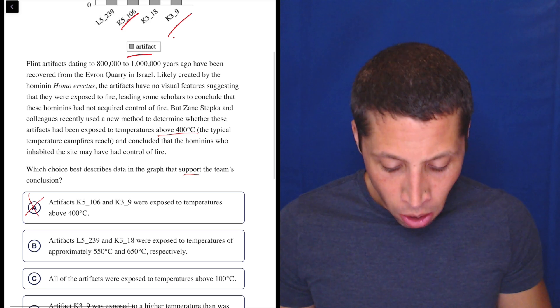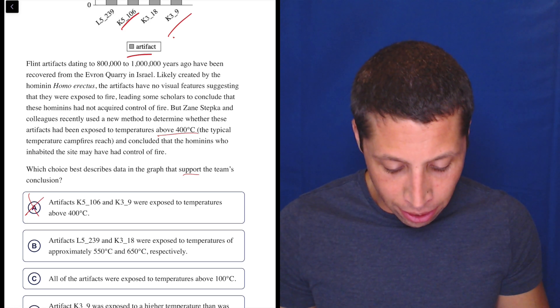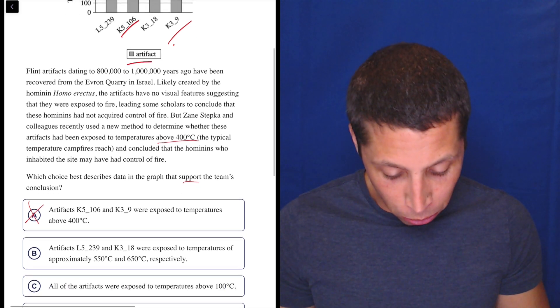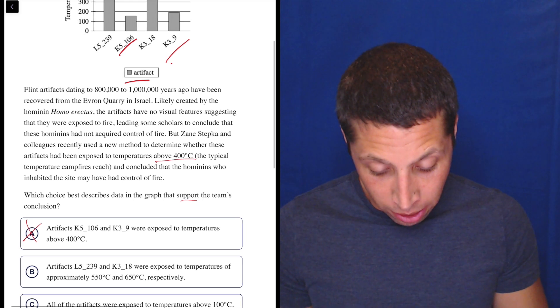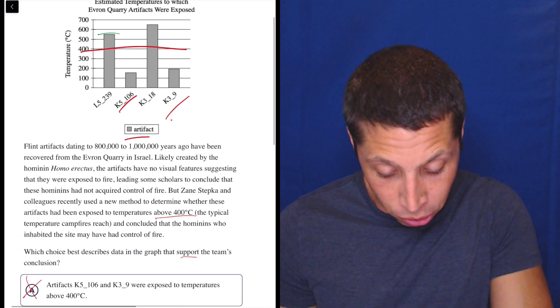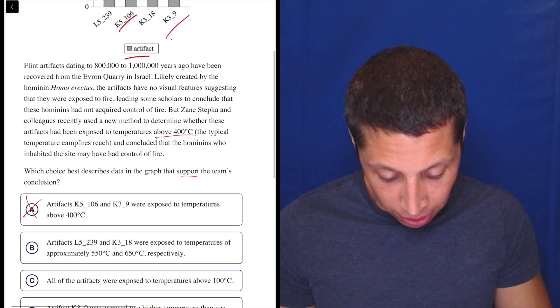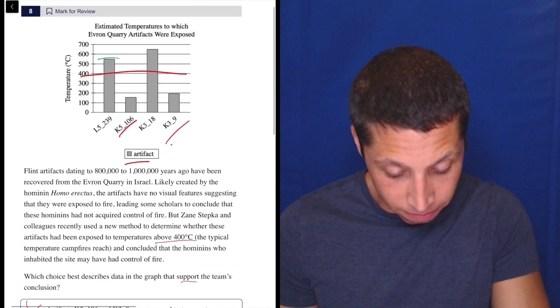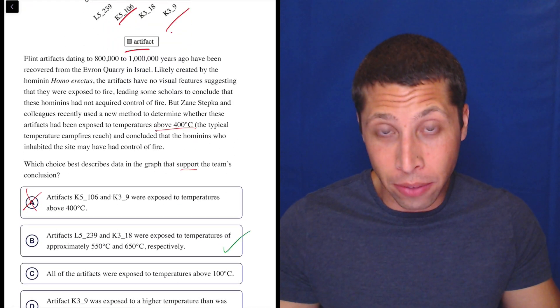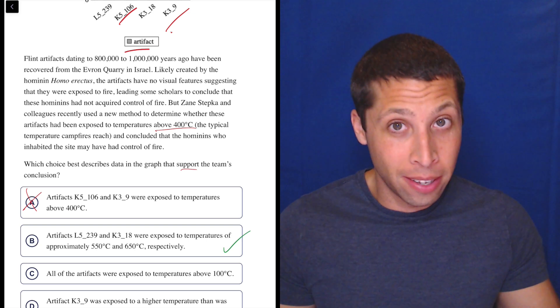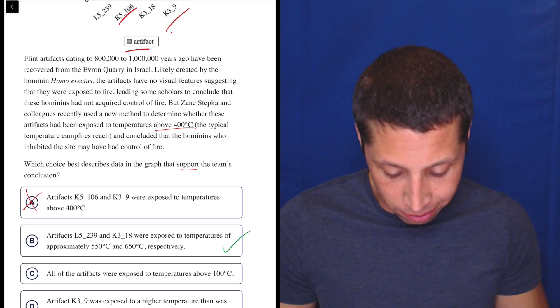Next, artifacts L5239 and K318 were exposed to temperatures of approximately 550 and 650 respectively. So L239, 550, sure. K318, 650. Looks good. Seems good. And because they're both above the line where fire would happen, that's the ones we want to talk about. So let's keep that in.